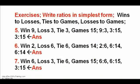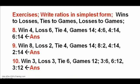See images. Exercises 5, 6, and 7. Write ratios in simplest form of wins to losses, ties to games, and losses to games. The answers are 6 to 14, 2 to 14, and 3 to 14, and 3 to 12, respectively. See image.